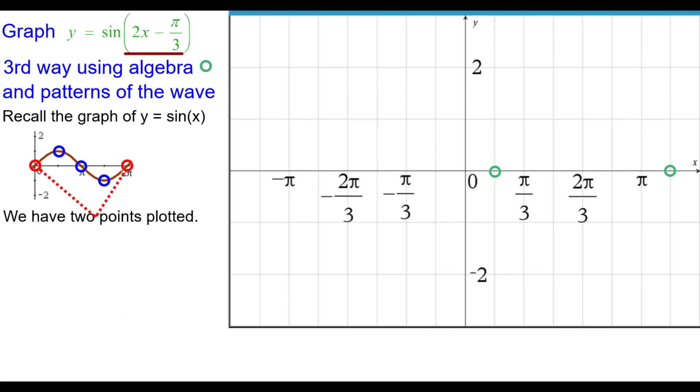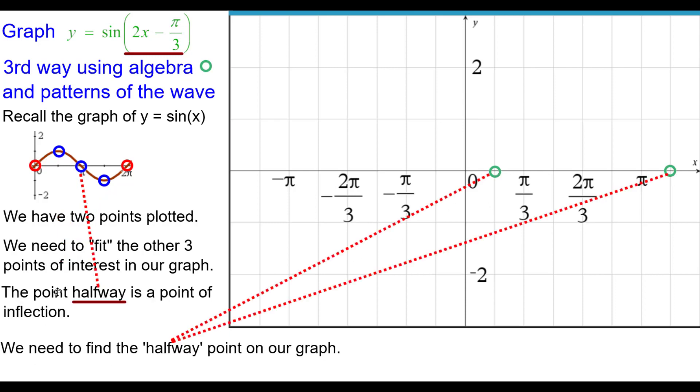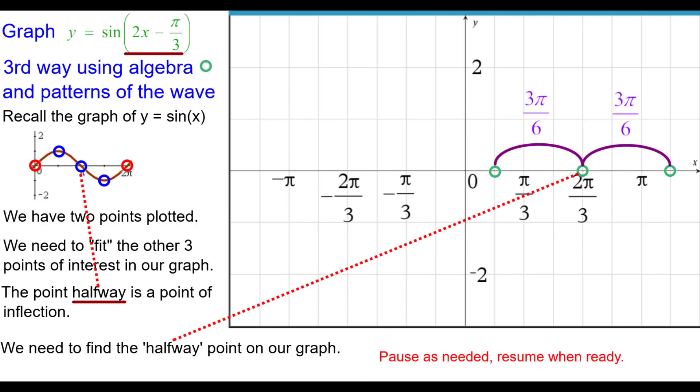So we have two points plotted. We now need to get the other three. We need to just fit them in between here. So halfway between these two points right here is another point of inflection. So I need to find the halfway point between those two points. And it turns out it's at 2 pi over 3, 0. And I also calculated the distance. They're both 3 pi over 6 apart to show that this is equidistant from those two.